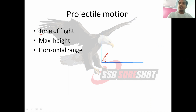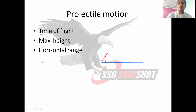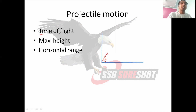Before discussing those three things, there are three main equations of motion. The first equation is v = u + at. The second equation is s = ut + ½at². The third equation is v² = u² + 2as. These three equations will be applicable throughout the complete projectile motion — whether finding time of flight, maximum height, or range.